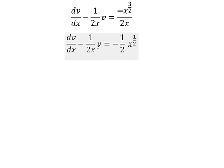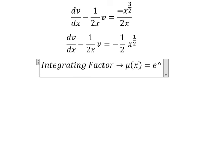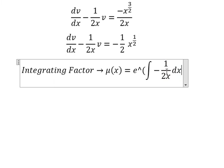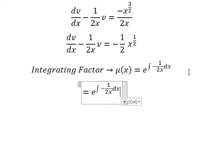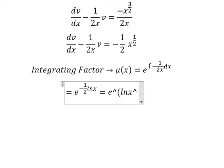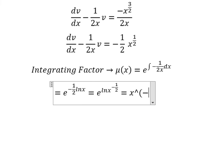Now we have v and the first derivative of v, so we can use the integrating factor method. We need to find mu of s equals e to the power of the integral of negative 1 over 2s ds. The integral of 1 over s gives us ln(s), so with negative 1 over 2 inside the natural log, we have e to the power of ln(s) to the power of negative 1 over 2, which gives us s to the power of negative 1 over 2.